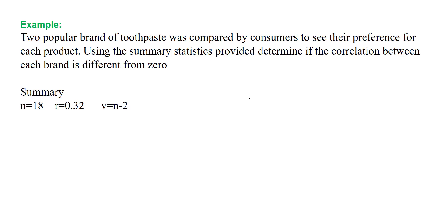The summary we have been given is that n equals 18, r equals 0.32, and v equals n minus 2, which is our degrees of freedom, where r was pre-calculated using the summation formula.